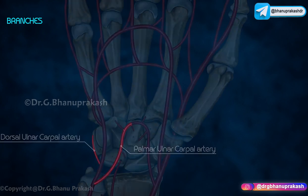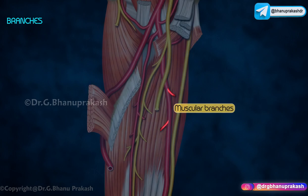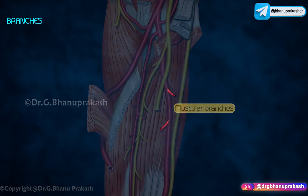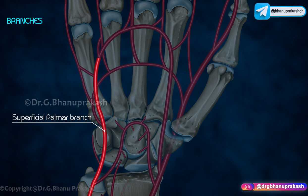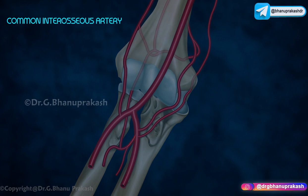Palmar and dorsal ulnar carpal branches take part in the formation of the carpal arches. Muscular branches are given off to the surrounding muscles. The deep palmar branch takes part in the formation of the deep palmar arch, and the superficial palmar branch forms the superficial palmar arch.